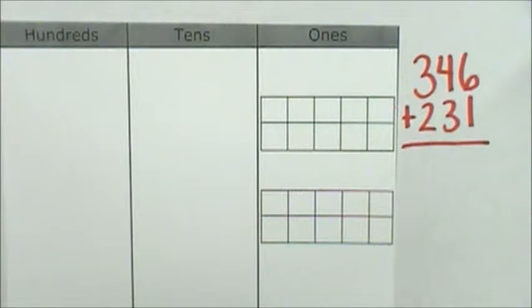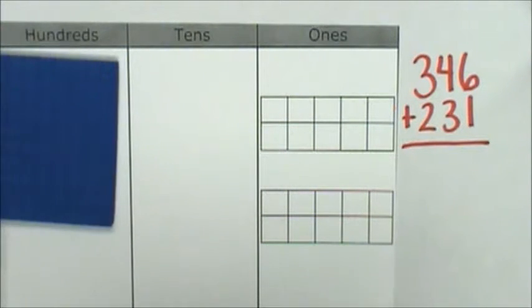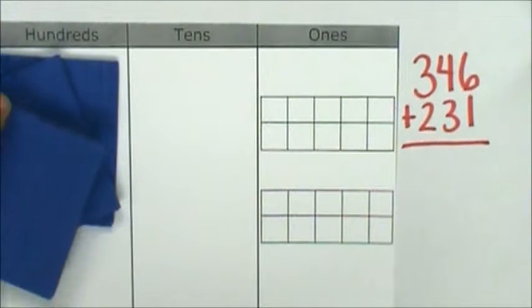First, I will represent 346 markers: 100, 200, 300.